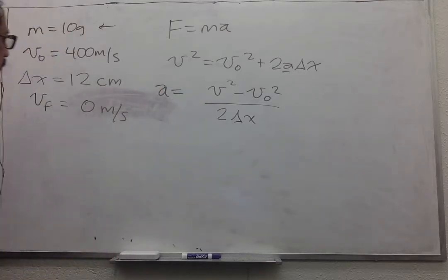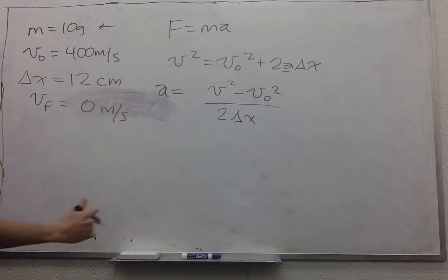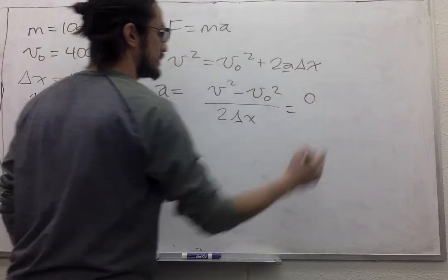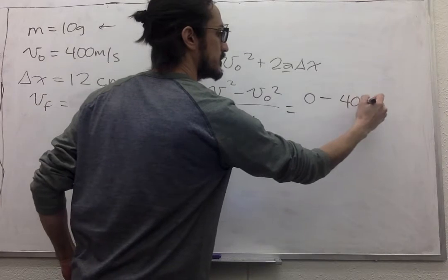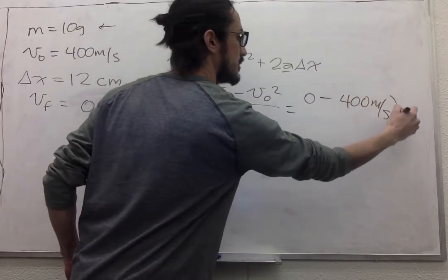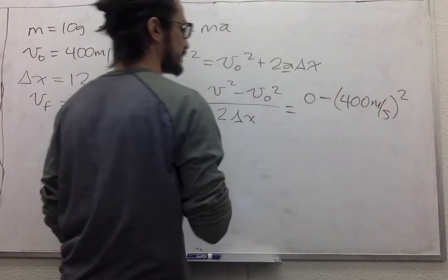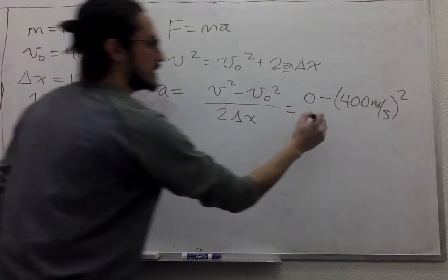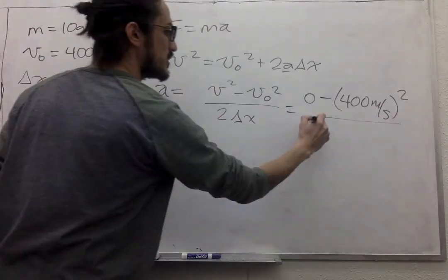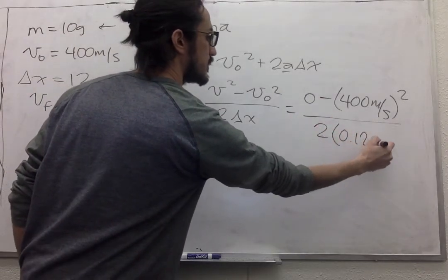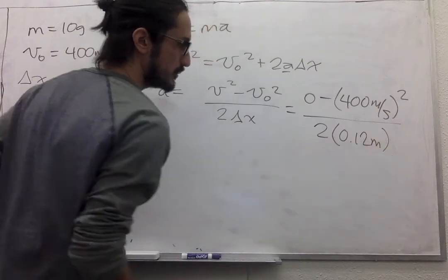The final velocity is zero. The initial velocity is 400 meters per second. The displacement is 12 centimeters times 2, so 0.12 meters.